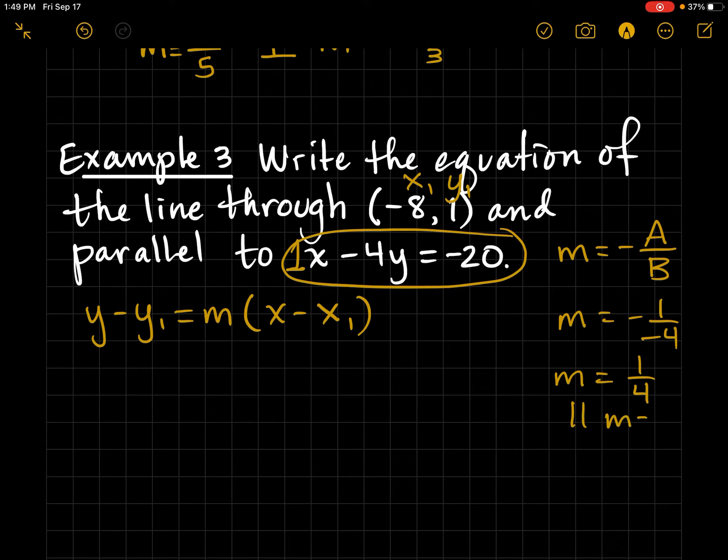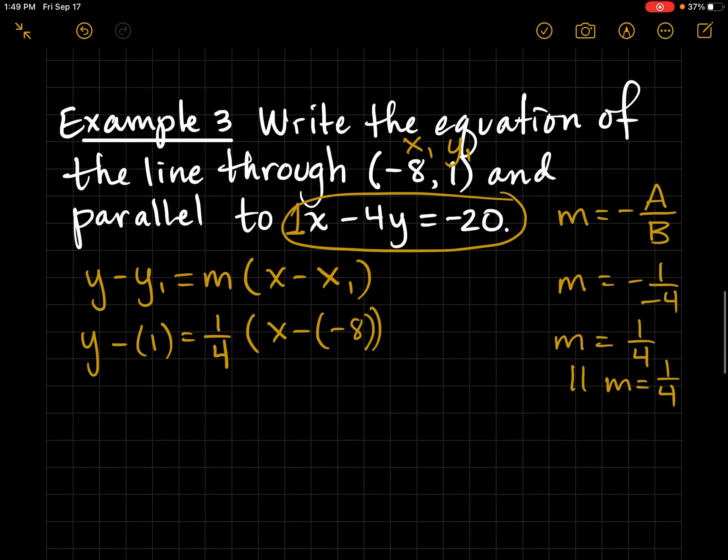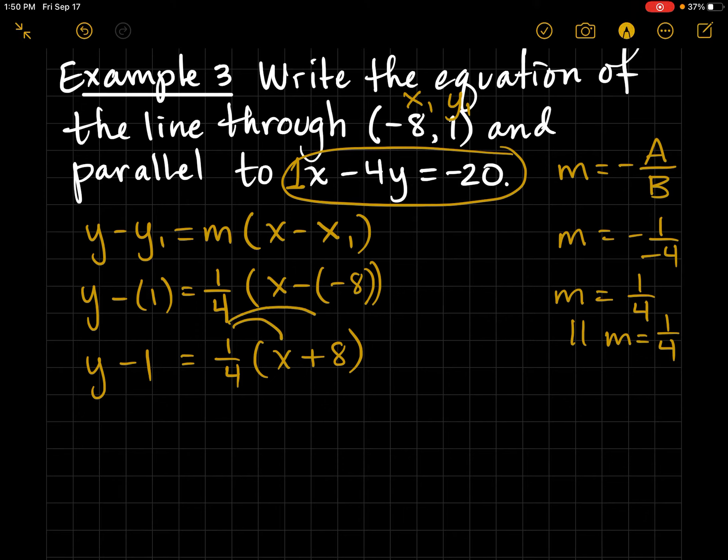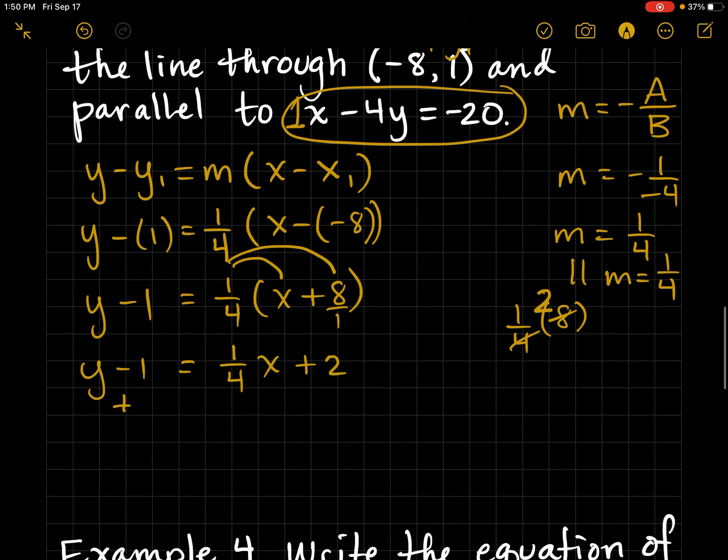So the parallel slope is also 1 fourth. So I'm going to plug 1 fourth in for M. I'm going to plug in negative 8 for X1. And Y1 is positive 1. And let's go ahead and simplify. I need to distribute. So I have 1 fourth X and then that's just going to be 2, right? 1 fourth times 8 is 2. And now I'm going to add 1 to both sides.